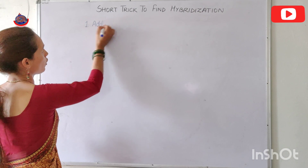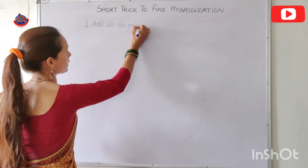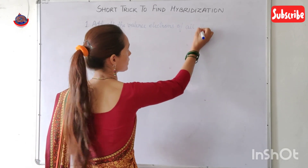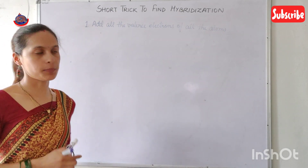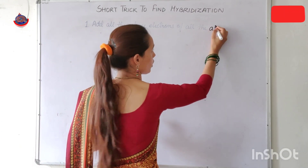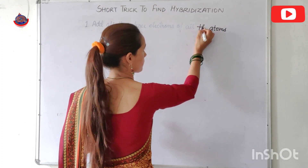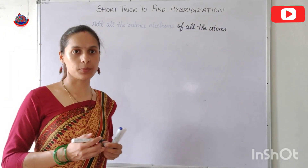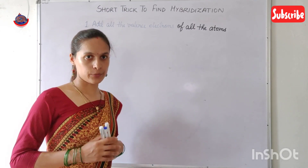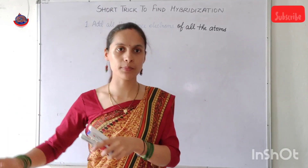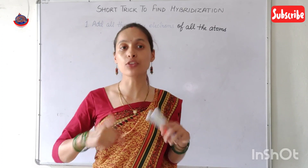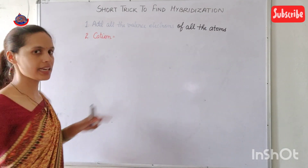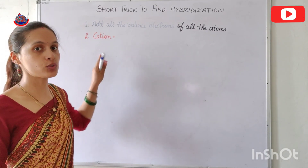So Step 1: add all the valence electrons of all the atoms present in that particular molecule or ion. Now, if you have a molecule then you skip the second step, but if you have a cation or anion then you have to perform the second step.